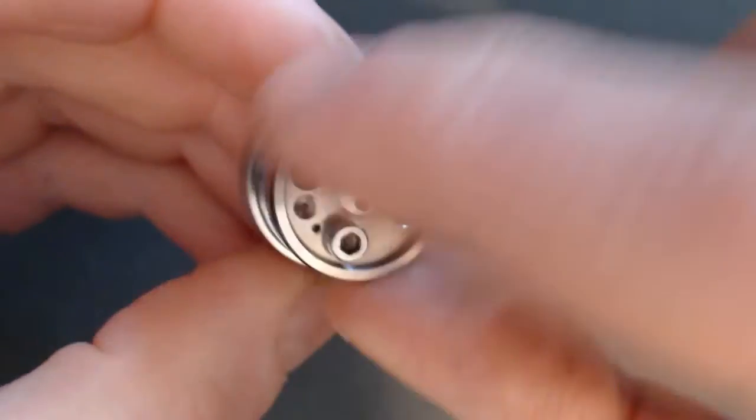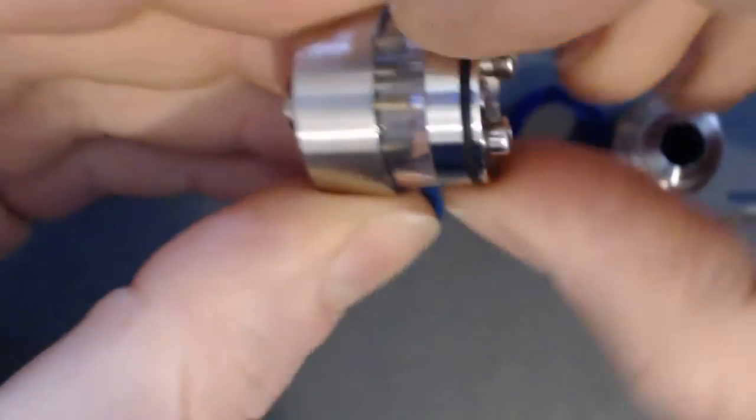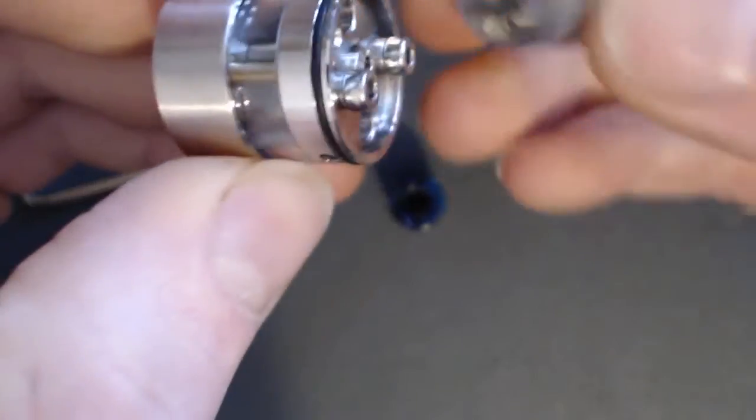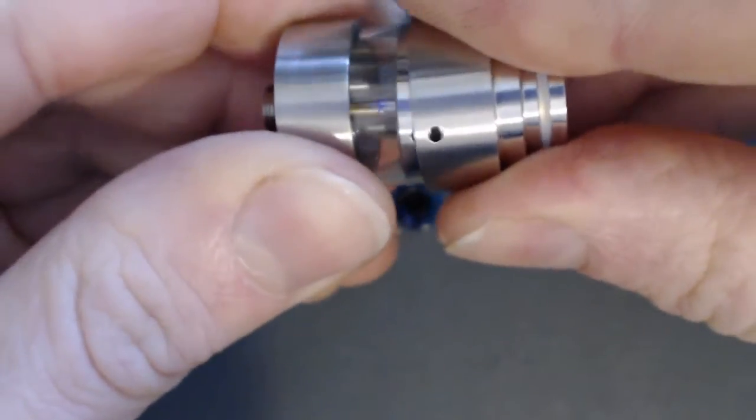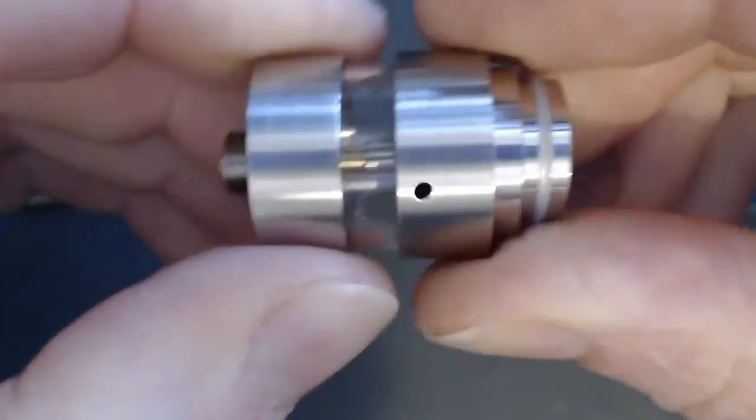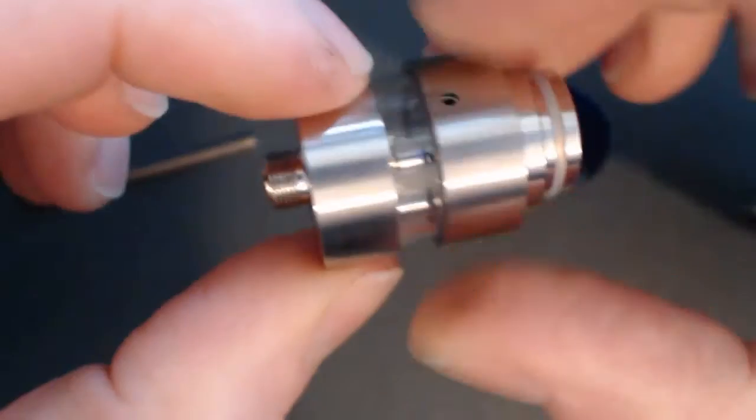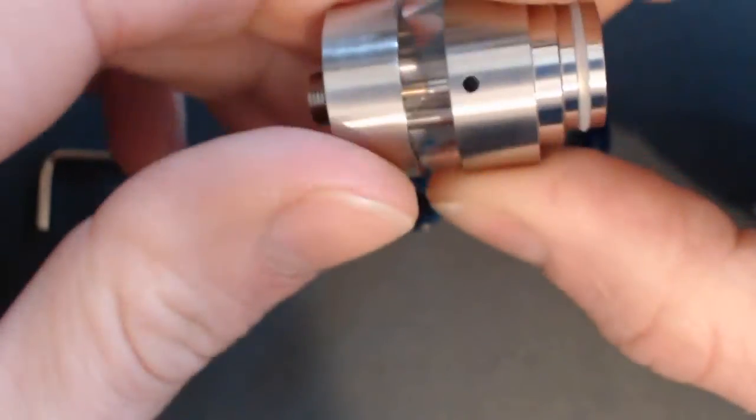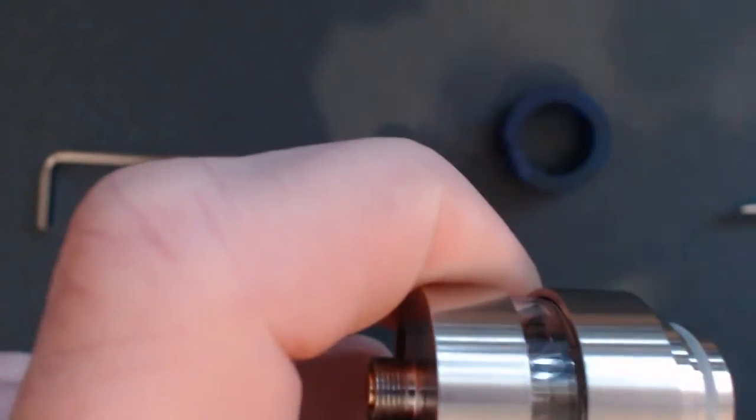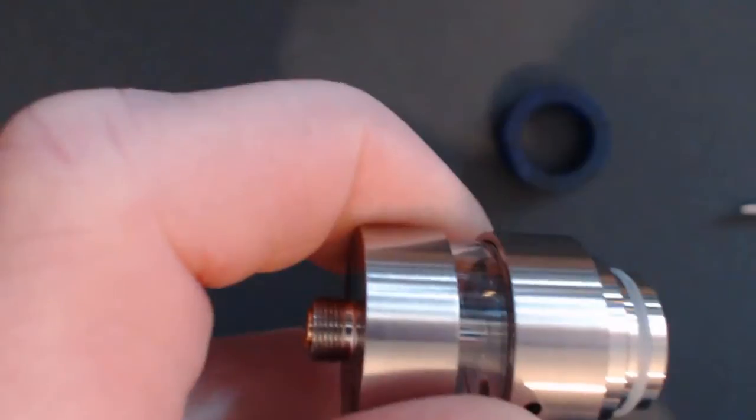I haven't heard anything from SXK as to whether they're doing replaceable spares for these yet, but if they do I'll certainly get some. So that top section here, this whole top section is your positive. There were some concerns by some people that obviously with that whole section being live, this cap when you put this on can also be live because that o-ring isn't technically enough to separate the two metal materials.